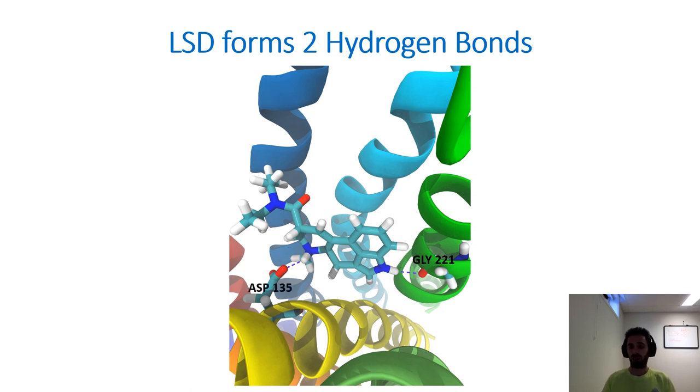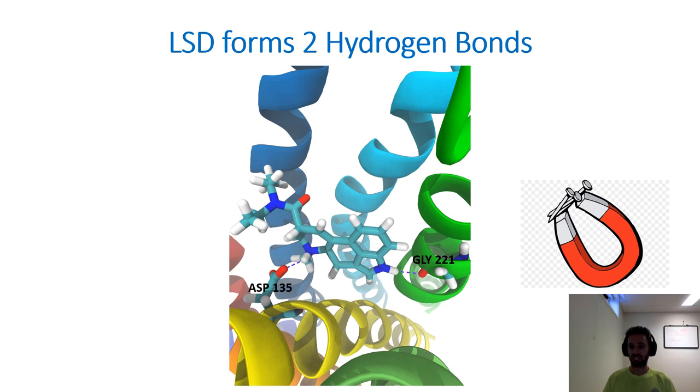Similarly, aspartic acid 135 helps hold part of the LSD molecule inside the receptor. It's the same situation where the hydrogen is positively charged and the oxygen is negatively charged. And this works kind of like a magnet holding a drug inside of a receptor.